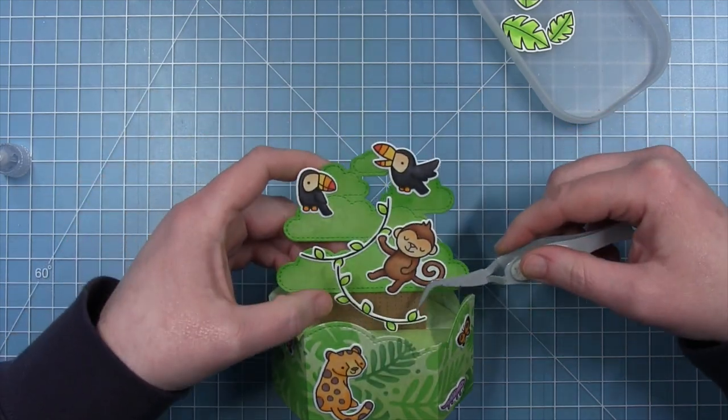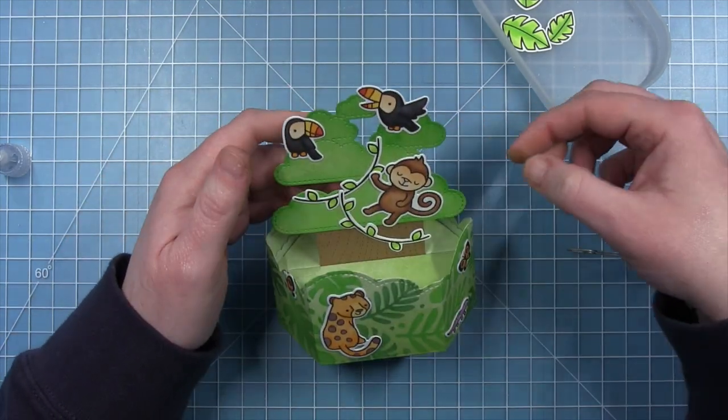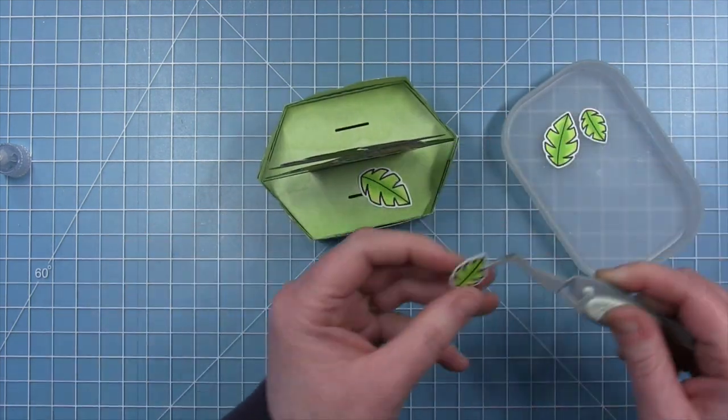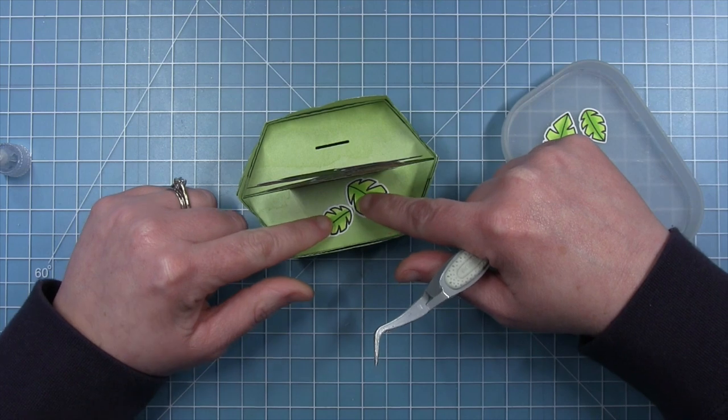Now here is my other vine that I colored and cut out. And I just think that looks really nice hanging all the way down onto the trunk. Kind of decorates the trunk a little bit as well.